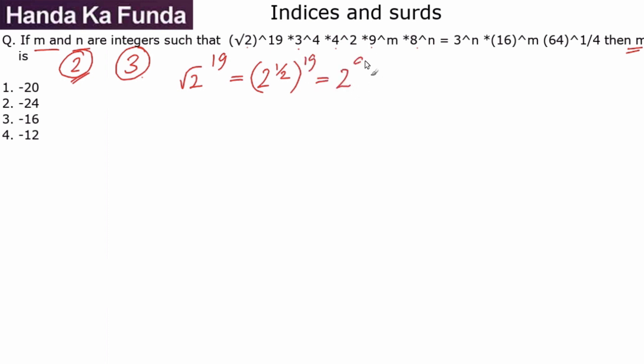Then I have 4 square. 4 square is 2 square squared, which is 2 to the power of 4. Then I have 8 to the power of n, which will be nothing else but 2 to the power of 3n, because 2 cube is 8. This is my left-hand side.